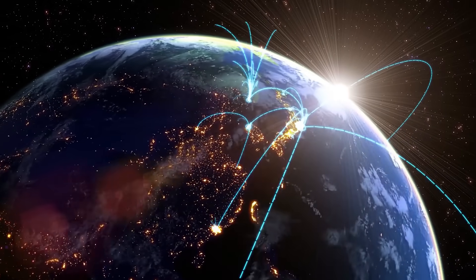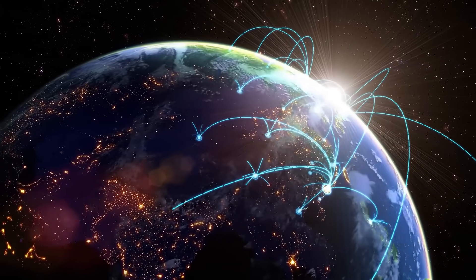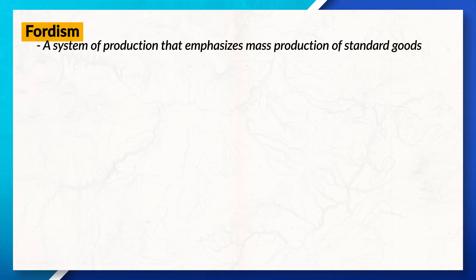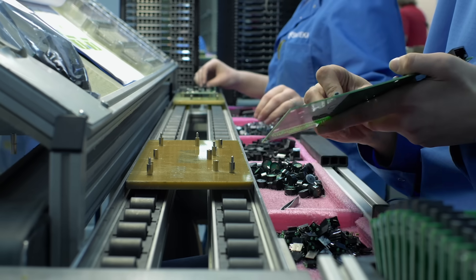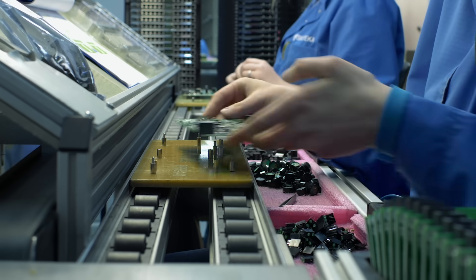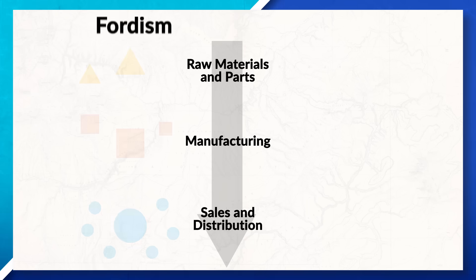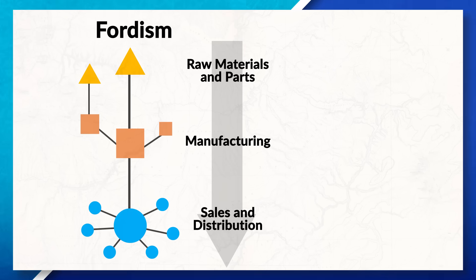Today it is not just globalization that is changing how and where companies produce their products. We can also see how the contemporary economic landscape is changing as countries continue to shift from Fordist methods of production to post-Fordist methods. Fordism emphasizes mass production of standard goods in a large factory that uses assembly lines. This production method has a set division of labor with each worker performing specific tasks, with decisions and production being centralized and a greater focus on standardization.